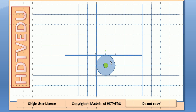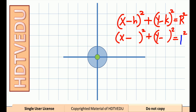Our circle has a radius of 1 unit and its center is right at the origin. When you compare x minus h squared plus y minus k squared equals r squared with x minus 0 squared plus y minus 0 squared equals 1 squared, we see that h is equal to 0, k is equal to 0, and the radius is 1.